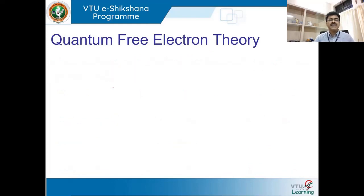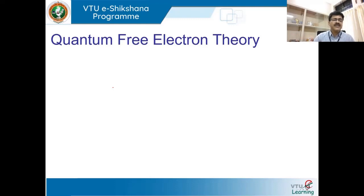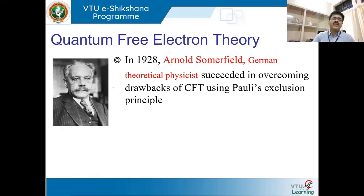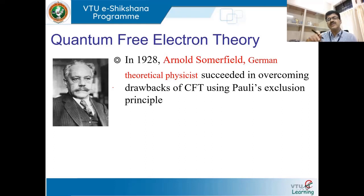If classical theory fails, how can we explain the conductivity of metals? What makes copper a better conductor than aluminium, and aluminium better than zinc? A new theory was developed — the quantum free electron theory — by well-known theoretical physicist Arnold Sommerfeld, a German physicist, in the year 1928. He succeeded in overcoming the drawbacks of the classical theory using Pauli's exclusion principle.